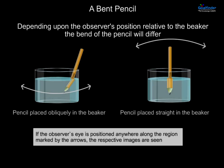If the observer's eye is positioned anywhere along the region marked by the arrows, the respective images are seen.